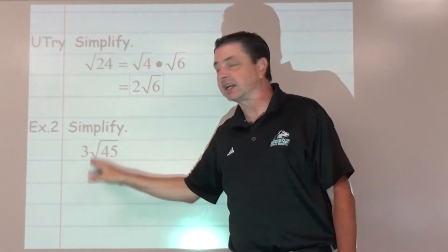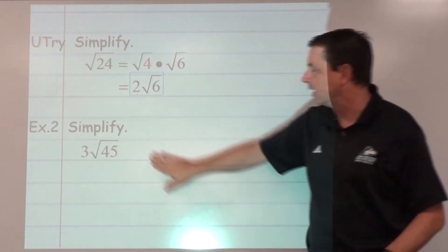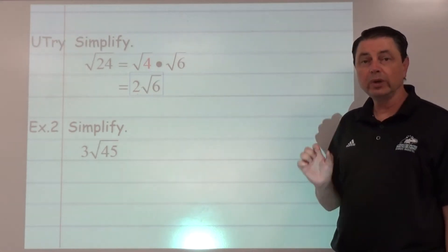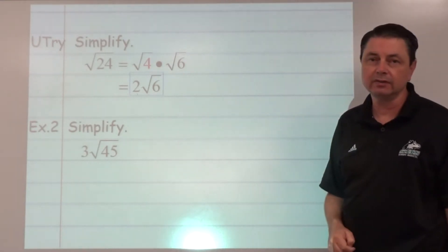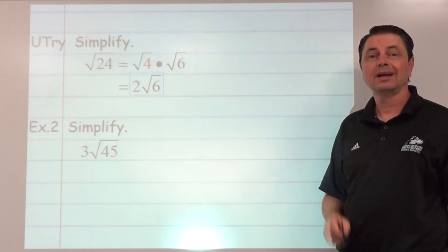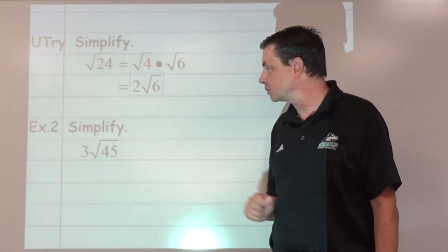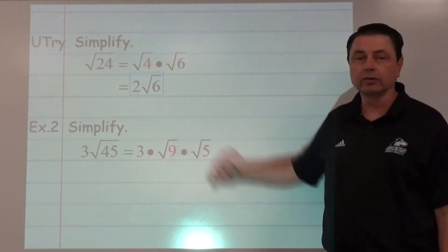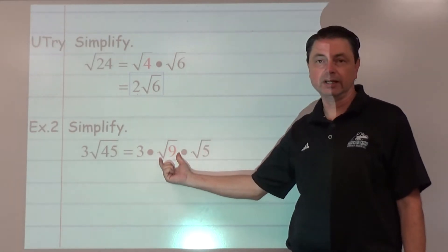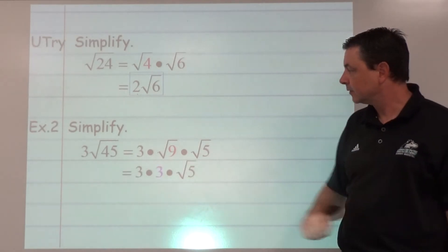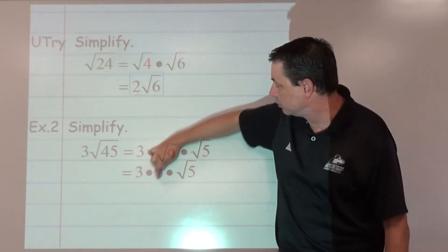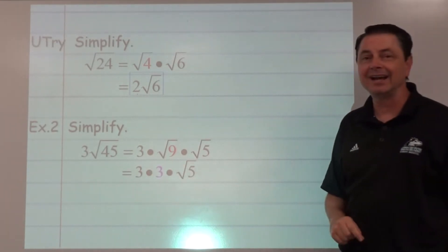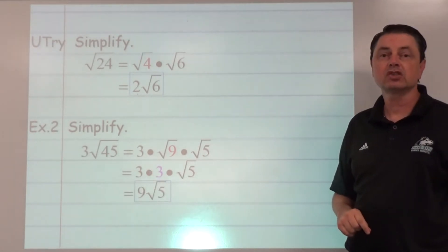Example number 2. This time we've already got a number on the outside of our root. We'll wait on that and focus on our root. Again, look at our list of perfect squares. Which of those perfect squares evenly divides into 45? We're looking for 9 — 9 times 5. So we split it up: 3, implying multiplication in front, times the square root of 9, times the square root of 5. The square root of 9 is 3. So we've got 3 times 3 times root 5. Since both 3s are outside the root, we multiply them: 3 times 3 is 9. Final answer: 9 square root of 5.